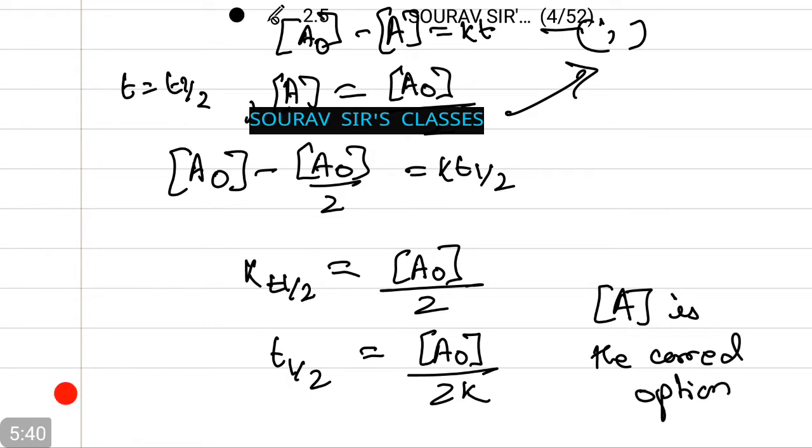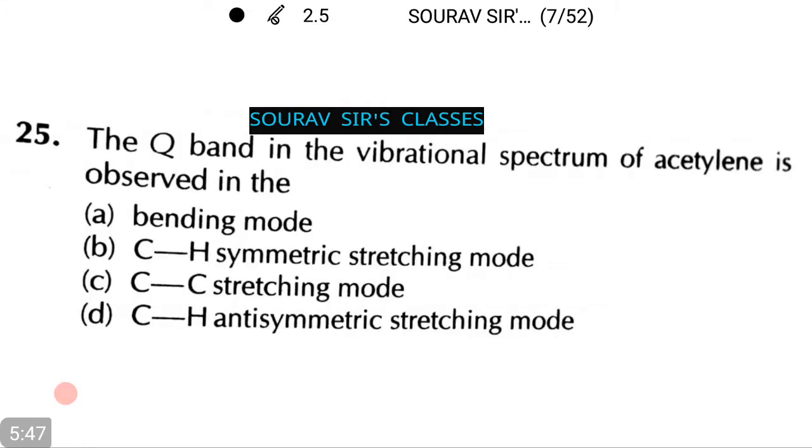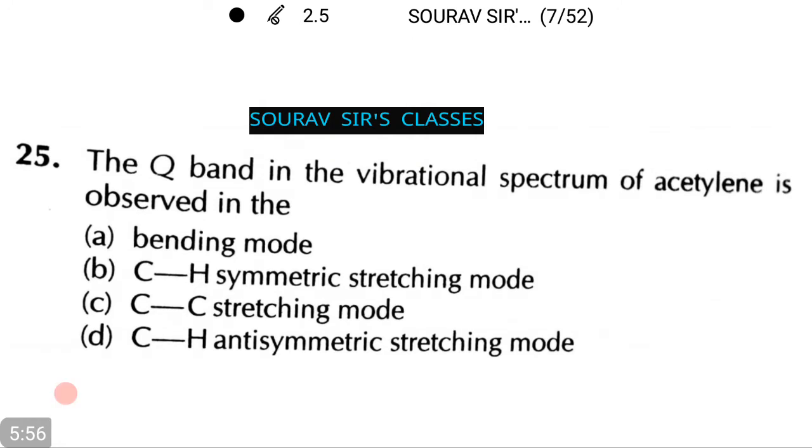Moving on to a very different question that I am sure you will have fun doing. The Q band in the vibrational spectrum of acetylene is observed in the C-C stretching mode. That is option number C is the correct answer. Let's see another question based on organic chemistry.